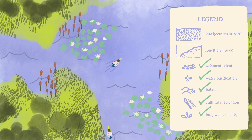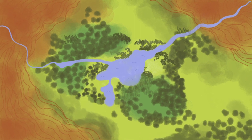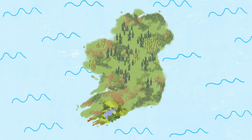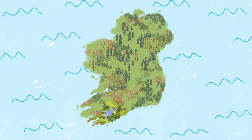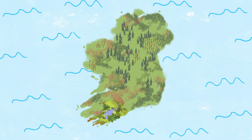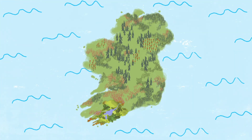Natural capital accounting can be carried out at different scales: a wetland, a river catchment, a county and a national scale. These accounts can help us make decisions about how we can work with our environment, our society and our economy.